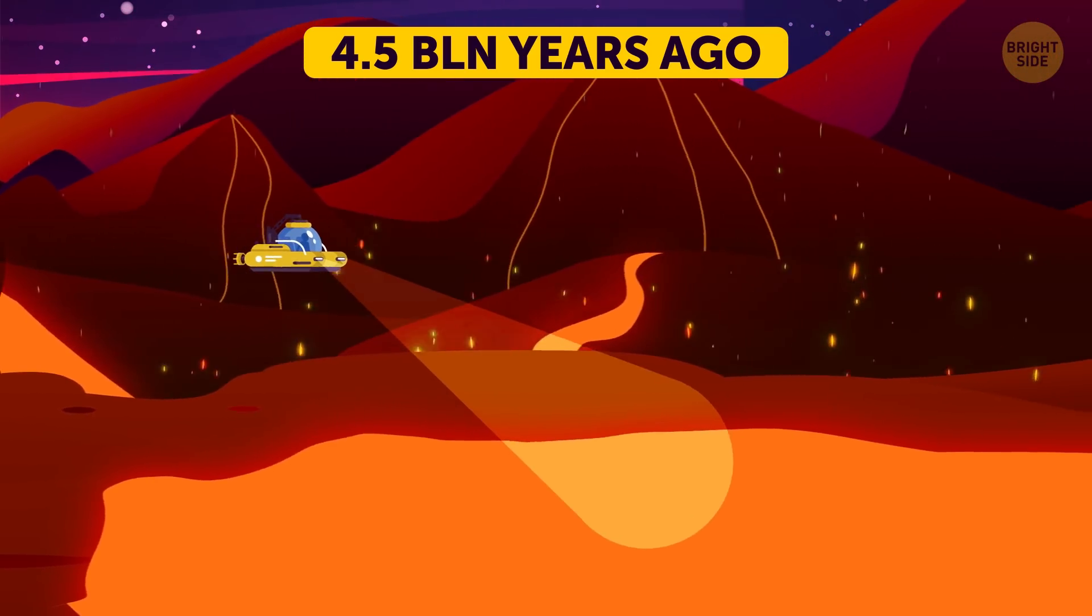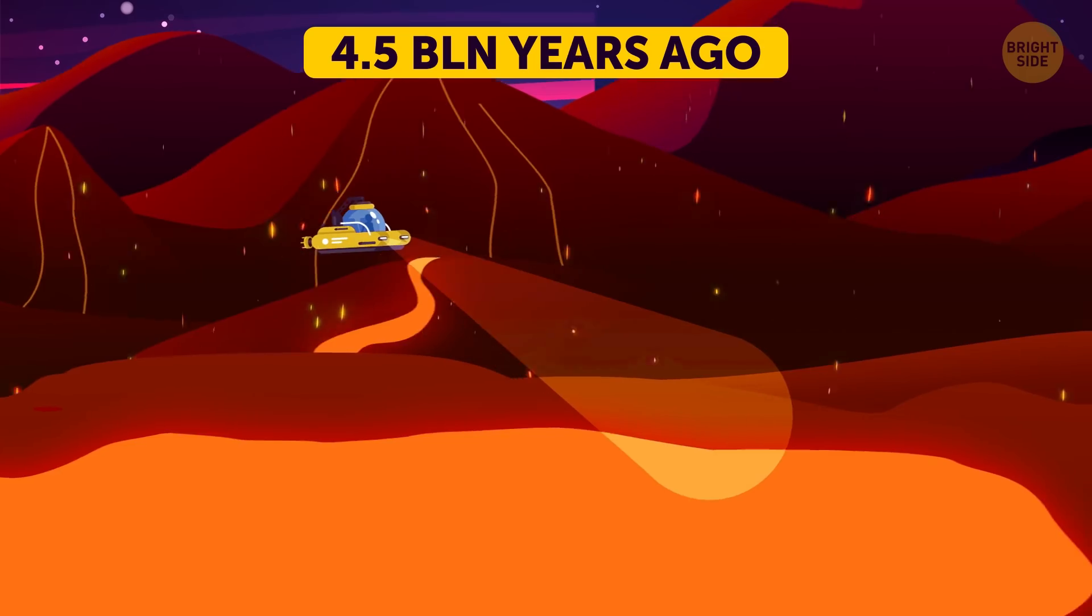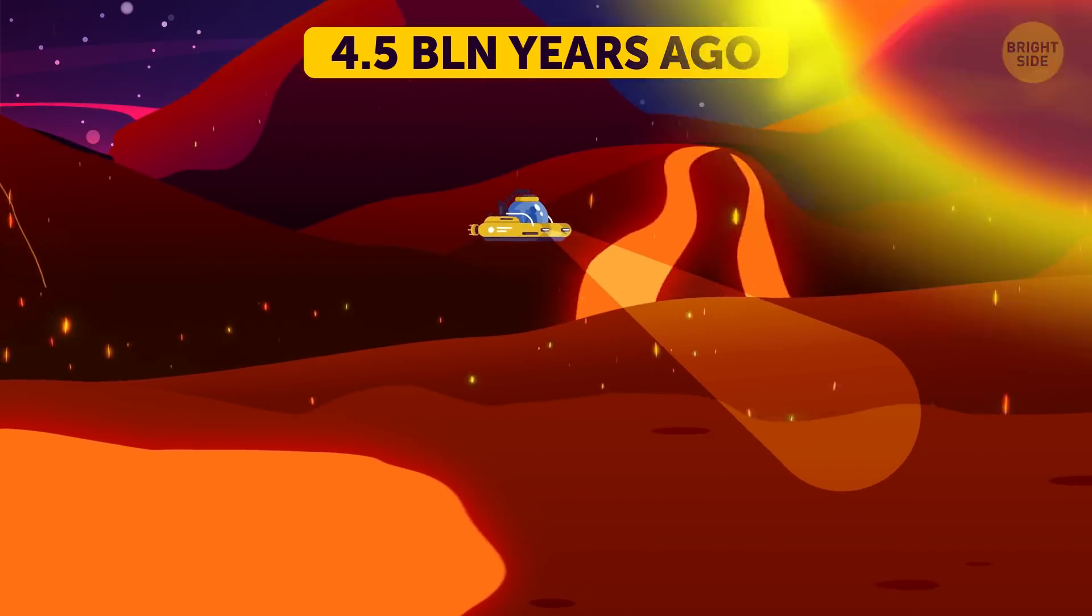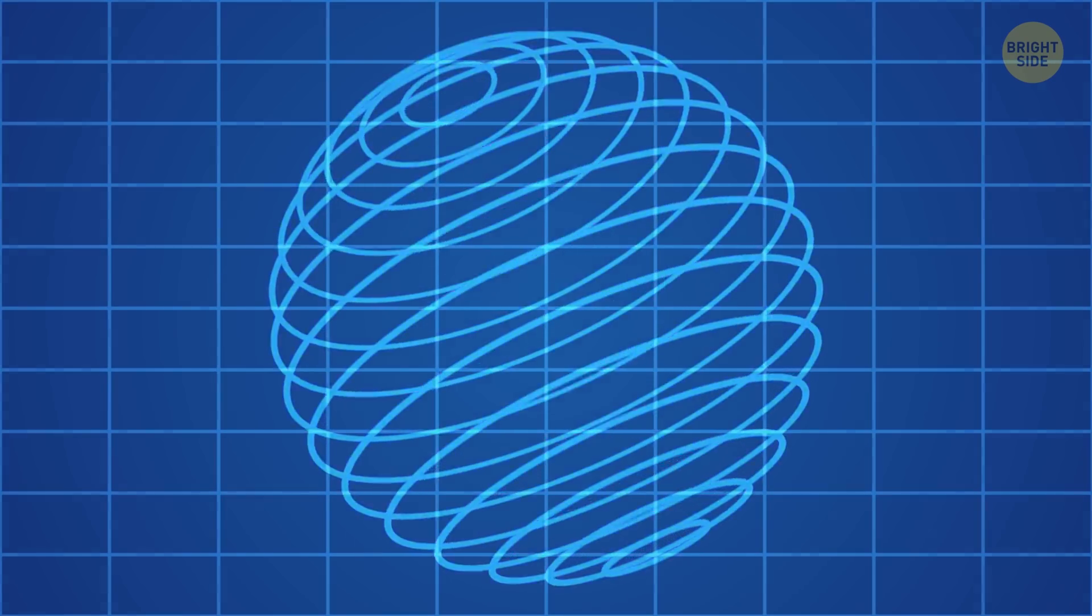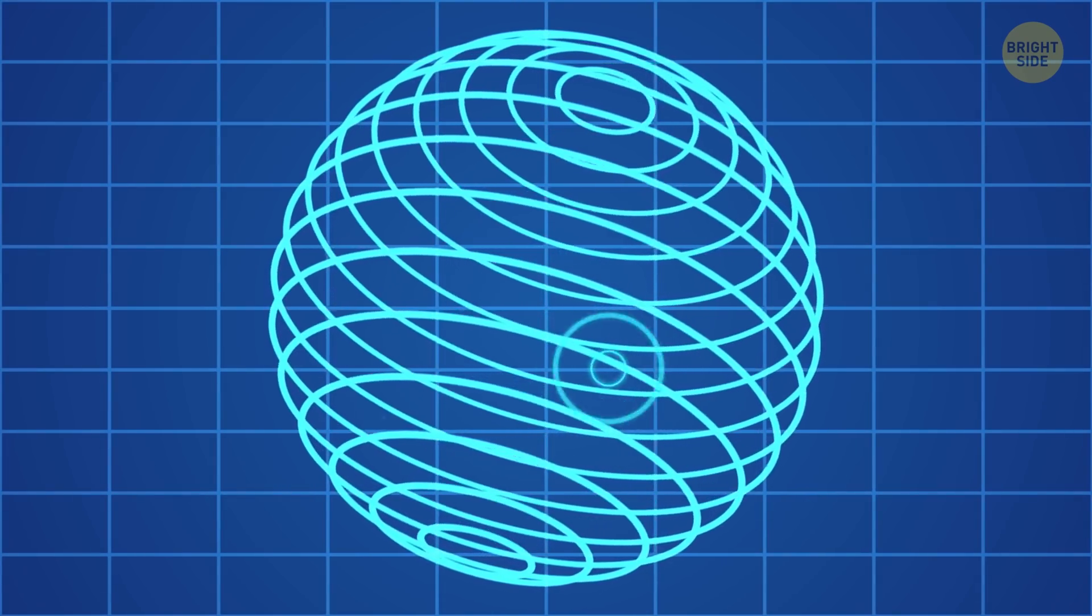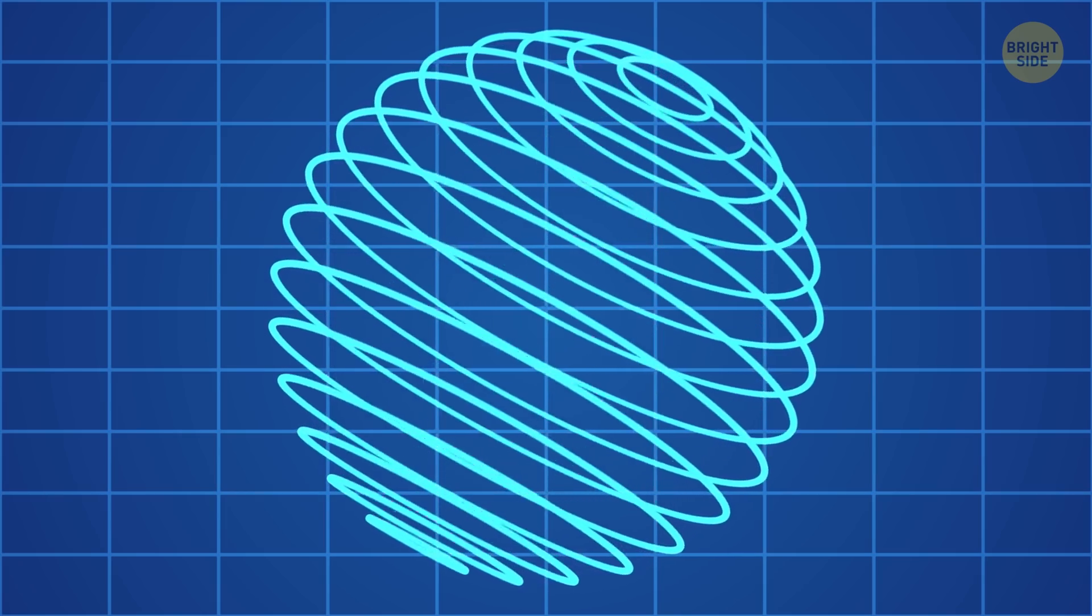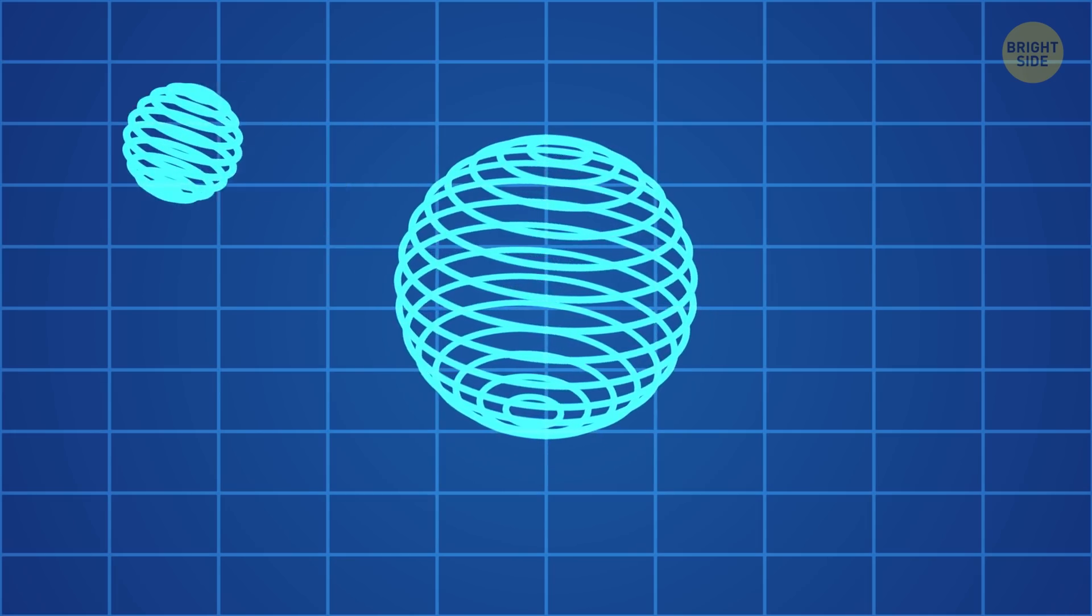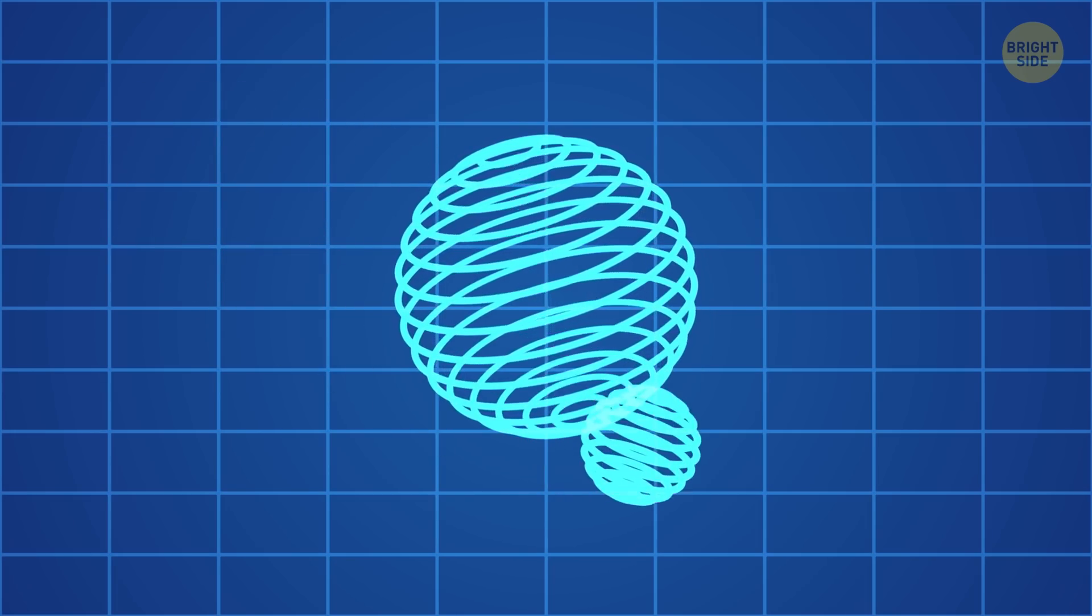Just look, entire oceans of magma. It'll take almost a billion years for our planet to take its solid form. What was that? A meteorite? Yeah, they were frequent visitors to Earth back then. That's why it couldn't get a chance to solidify.